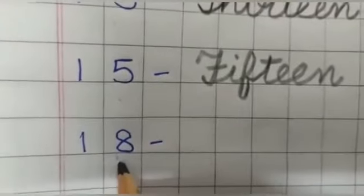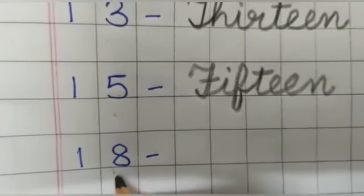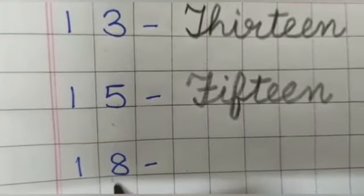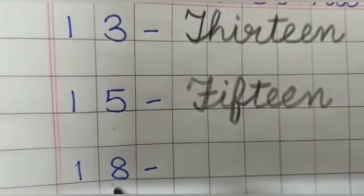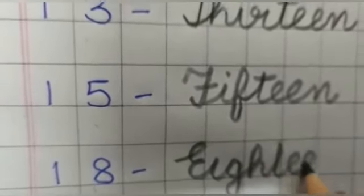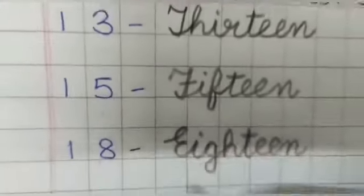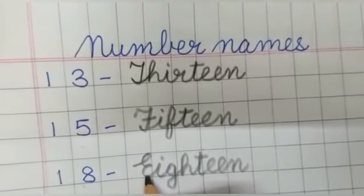Now, which number is this? 18. Which number is this? 18. And spelling of 18 is E-I-G-H-T-E-E-N. And 18 we will write E capital, because E is our first letter.